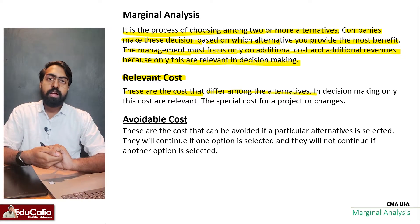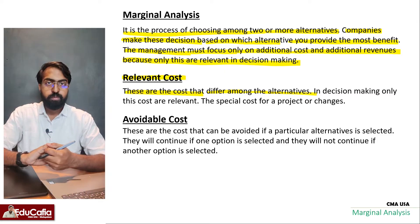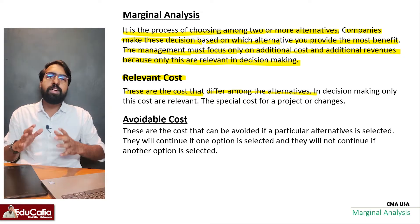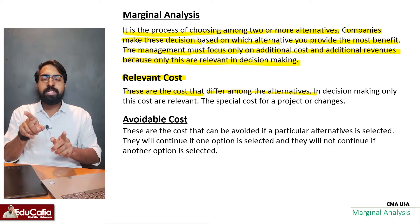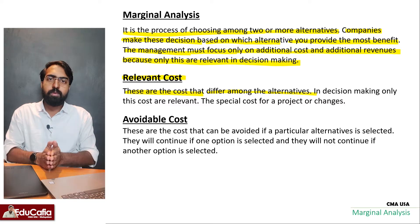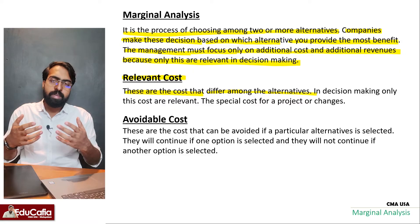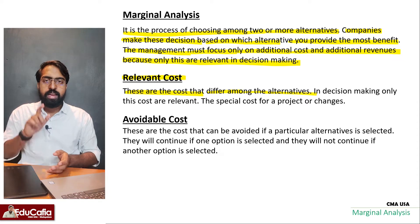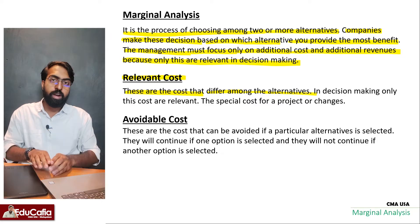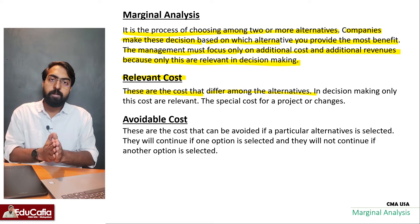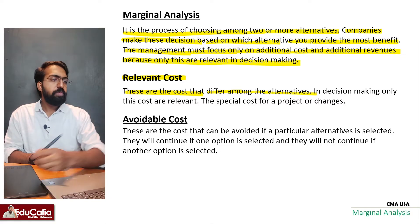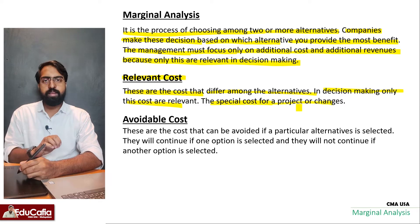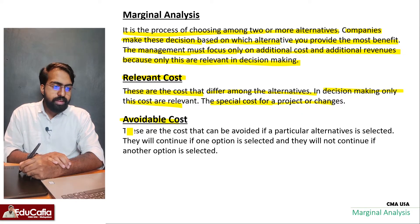Relevant cost: these are the costs that differ among alternatives. In decision making, only these costs are relevant — the special cost for a project or changes. Avoidable costs are the costs that can be avoided if a particular alternative is selected.